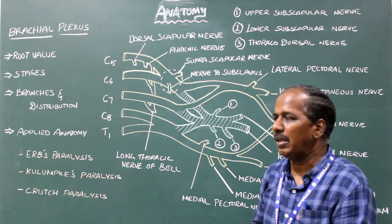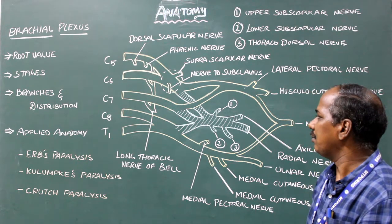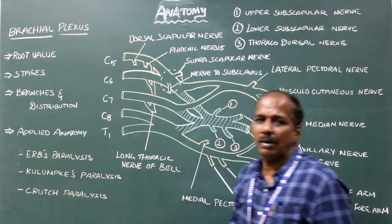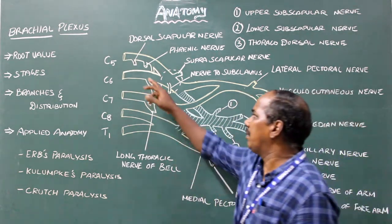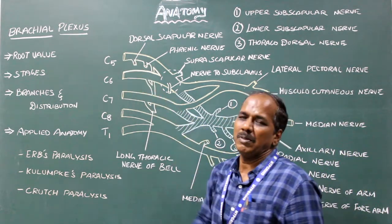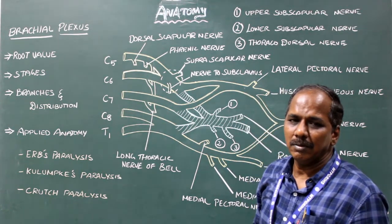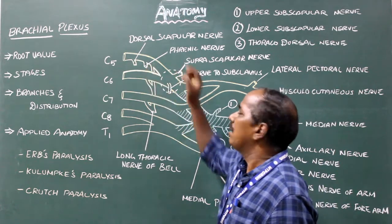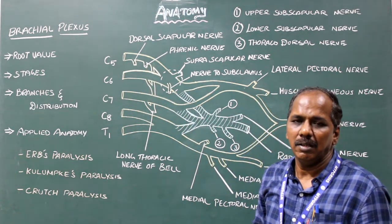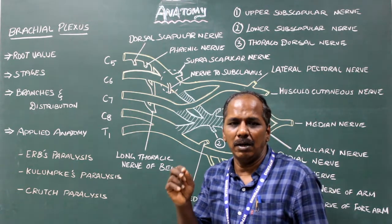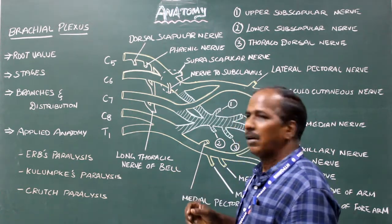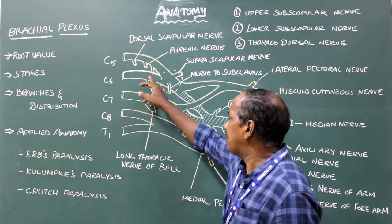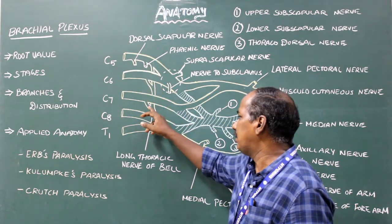Branches from the root stage. Number 1: dorsal scapular nerve — it arises from the C5 root. Number 2: branch to phrenic nerve — it also arises from C5. Number 3: long thoracic nerve of Bell, or nerve to serratus anterior — it arises from the C5, C6 and C7 roots.